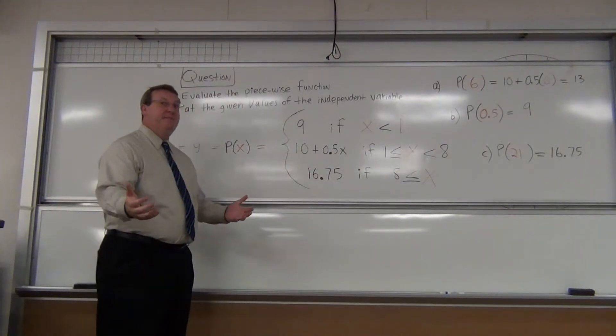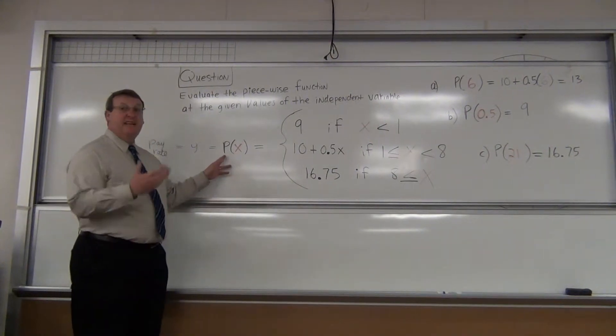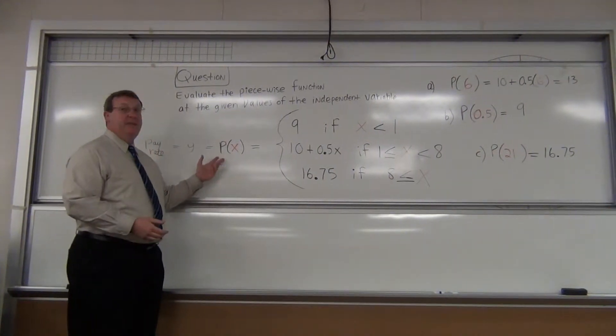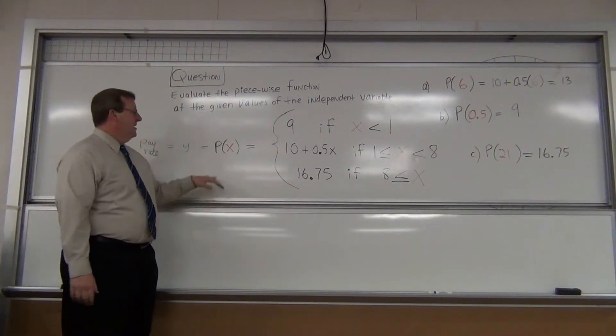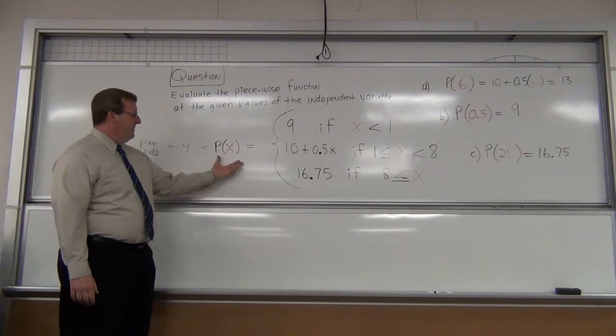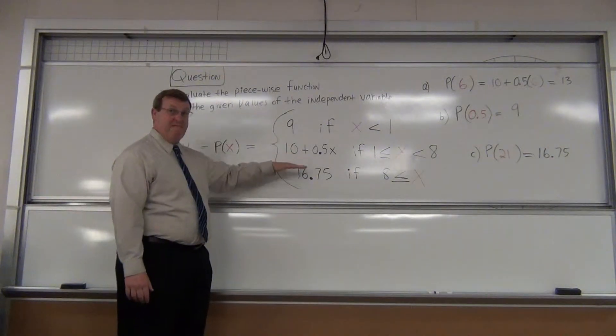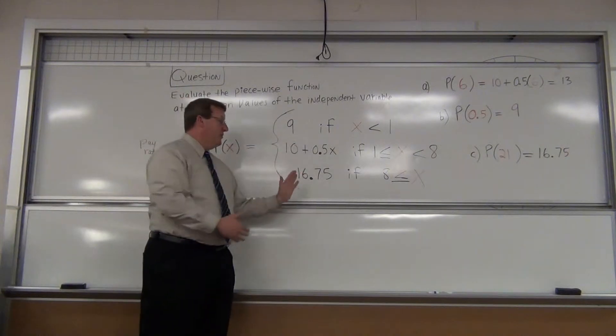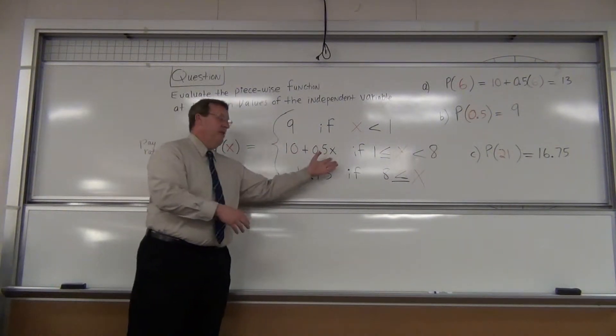Now it looks very intimidating. Remember the function notation? The letter here instead of an F is a P. Remember you can do any letter you want to represent a function. In this case P of input X is equal to three different possible relationships between P and your output.